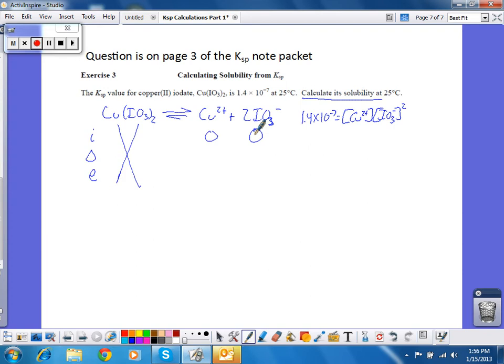Now, to get to equilibrium, I obviously have to add ions. Otherwise, I wouldn't have an equilibrium system. So, when I look at the ratio, I get one copper two plus to two iodates. So, if I call the amount of copper that dissolves X, then the amount of iodate that I get is 2X. So, at equilibrium, my concentrations are X and 2X.